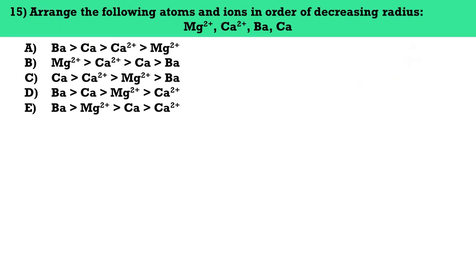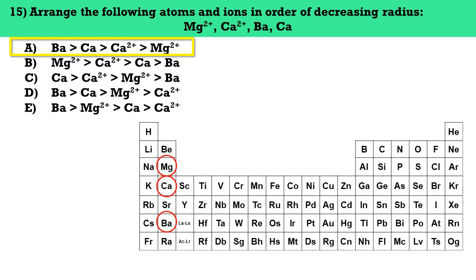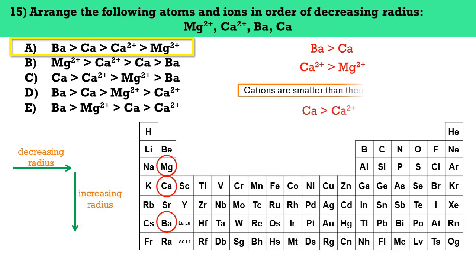Number fifteen, arrange the following atoms and ions in order of decreasing radius: Mg2+, Ca2+, Ba, and Ca. The answer here is letter A. For atomic radius, moving left to right across a period, the atomic radius generally decreases; moving top to bottom down a group, it generally increases. Since Ba and Ca are in the same group, Ba is larger than Ca. Since Ca is below Mg in group 2A, Ca2+ is larger than Mg2+. Since cations are smaller than their parent atoms, Ca is larger than Ca2+. Therefore: Ba > Ca > Ca2+ > Mg2+.